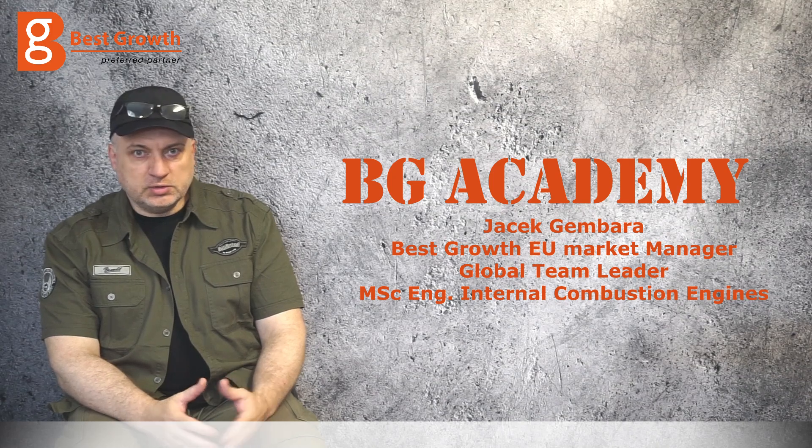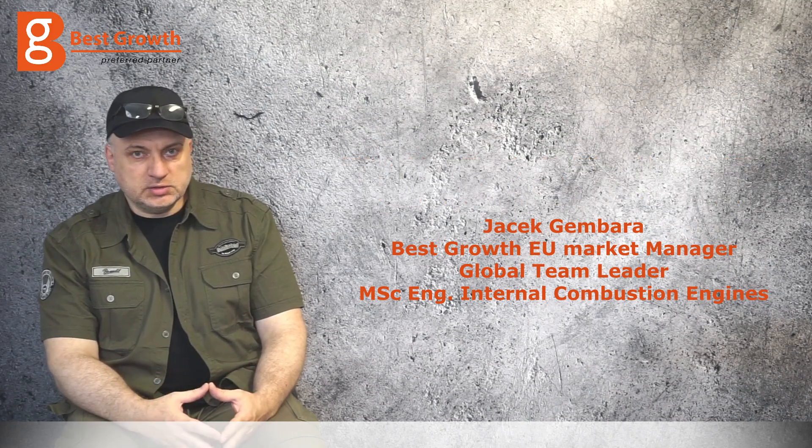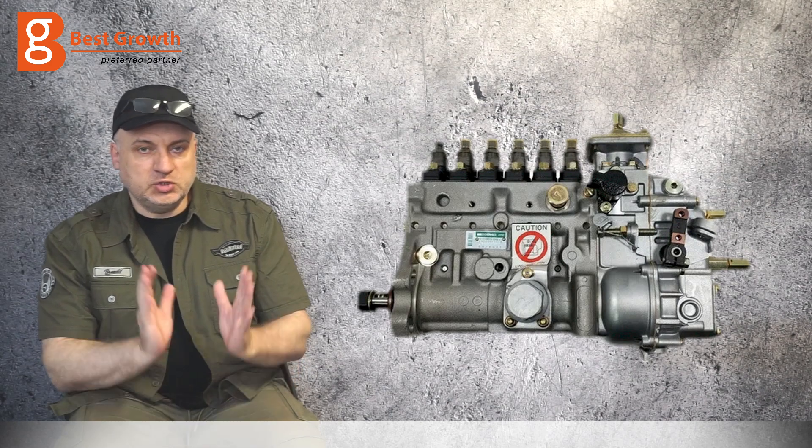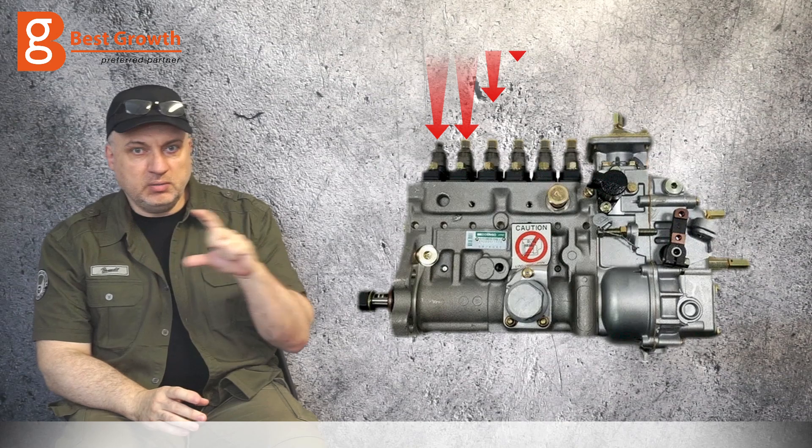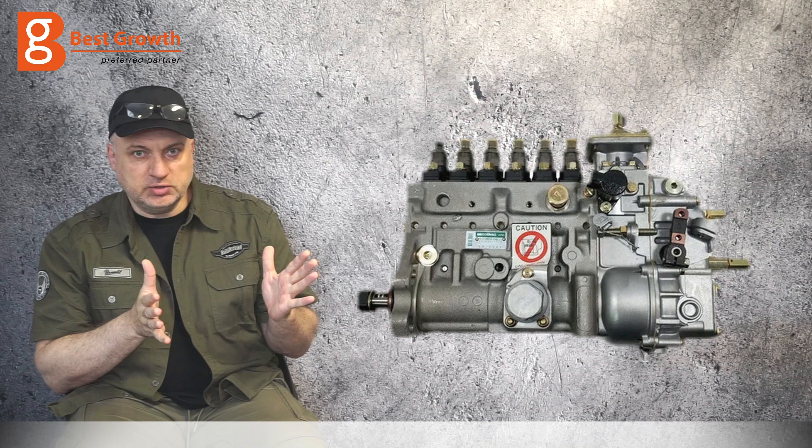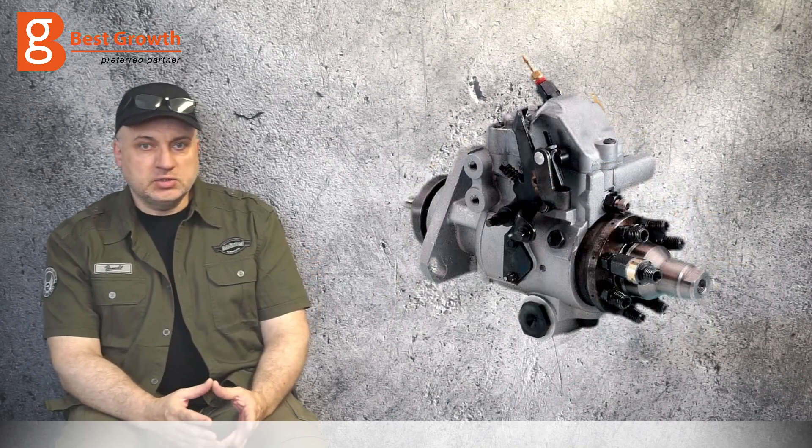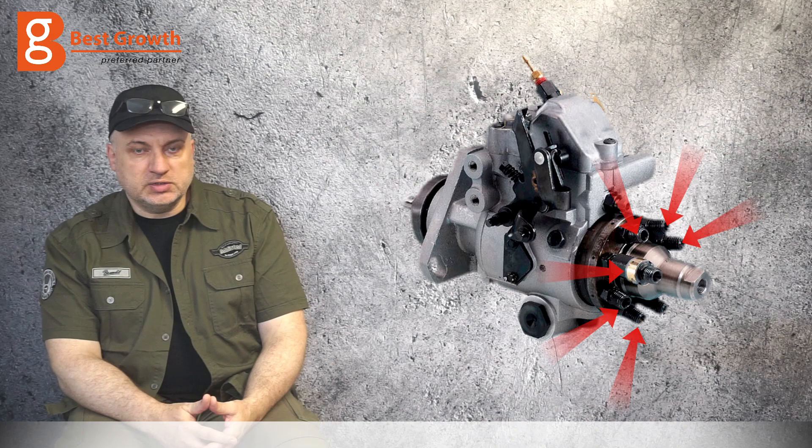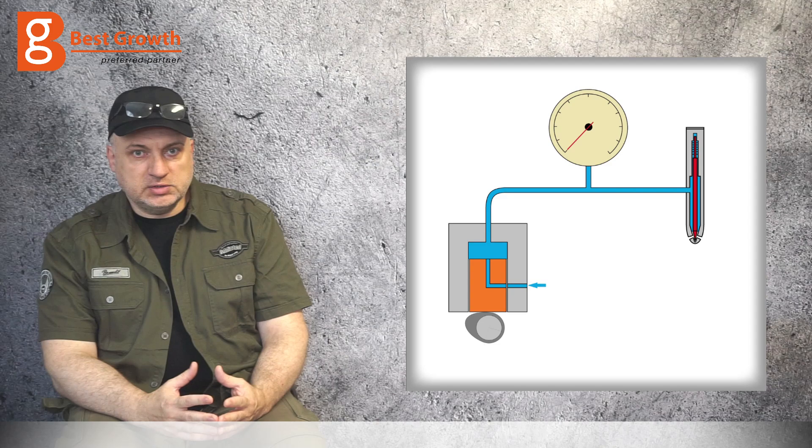So firstly a few words about a mechanical injection system, the one that is based on a mechanical injection pump. There are actually two solutions you can meet. One is the injection pump with many pumping sections, as many as cylinders on the engine. And the other solution is one pumping section and a distributor that directs the pressure to the injectors on the cylinders. But our main focus would be the pumping section itself.